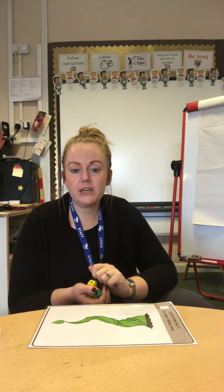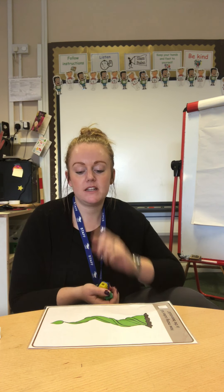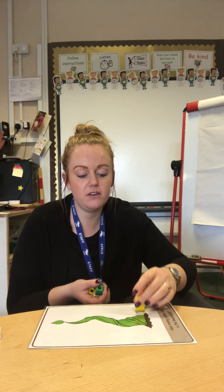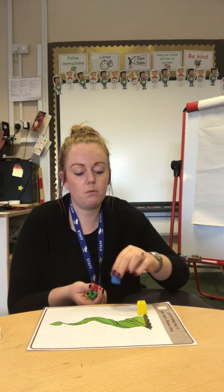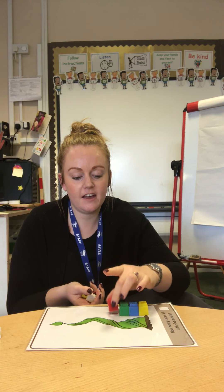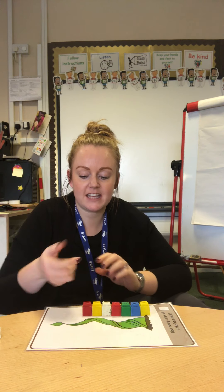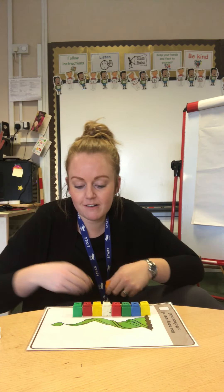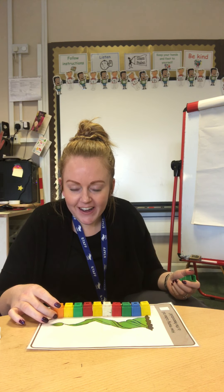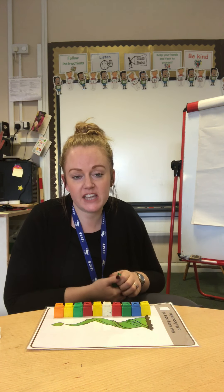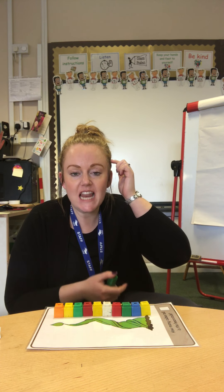This beanstalk is even taller, even longer. If the first small beanstalk took two cubes and the next one took six cubes, how many cubes do you think it's going to take to measure the full length of this one? I'm going to guess ten. Have a little guess — make your prediction. One, two, three, four, five, six, seven, eight, nine — ten! I guessed right. Did you get ten as well? It took ten cubes to measure the length of this beanstalk.